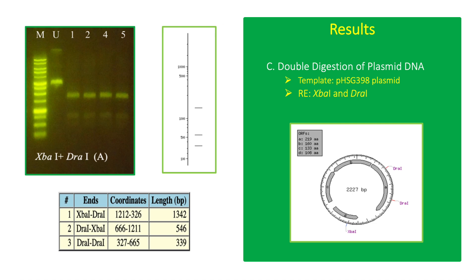This result shows an actual gel image of pHSG-398 plasmid DNA cut with two restriction enzymes, XBA1 and DRA1. Three distinct bands are visible due to the two cuts made by DRA1 and one cut made by XBA1.